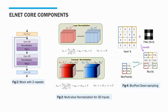Now we present the core components of LNET. On the left is a block module with two repeats. Each repeat is a sequence of 2D convolution, normalization, then a ReLU. A skip connection is added between the input and output of a block to allow for better convergence during training.